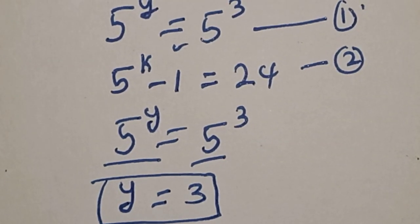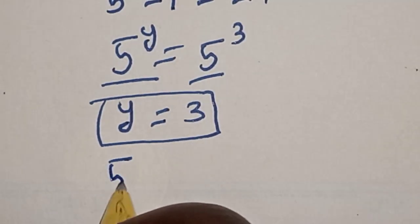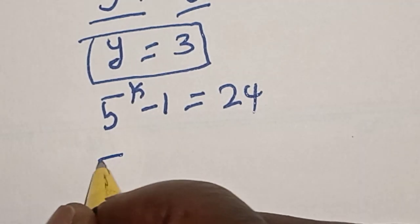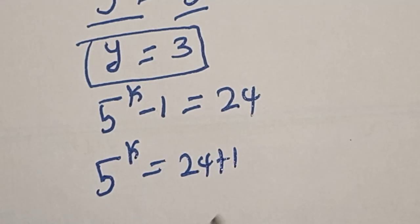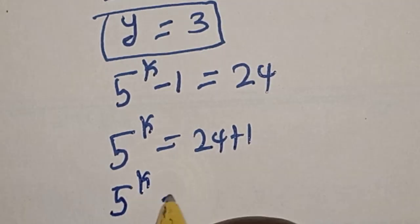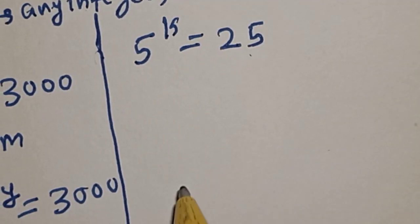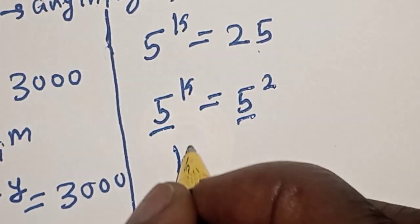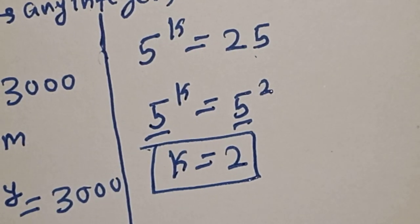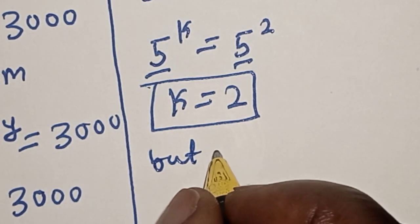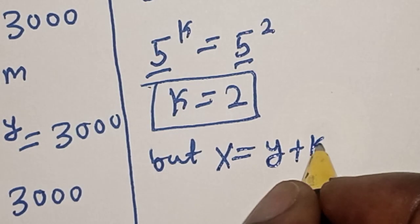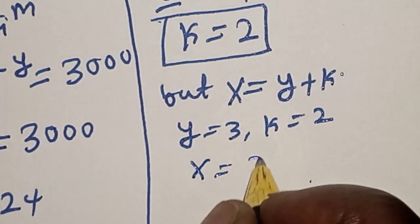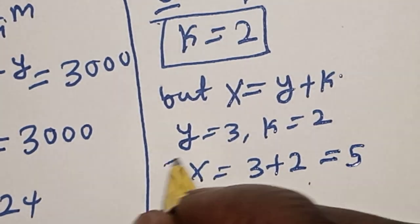That is the value of y. From equation 2, we have 5 raised to power k minus 1 equals 24, so 5 raised to power k equals 25, which is 5 squared. Since they have the same base, k is equal to 2. Now, since x equals y plus k, we have x equals 3 plus 2, which equals 5.